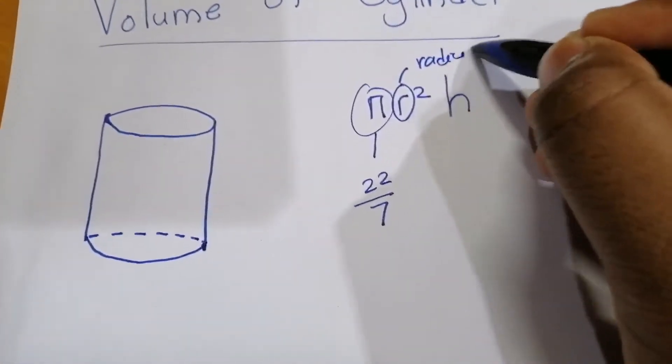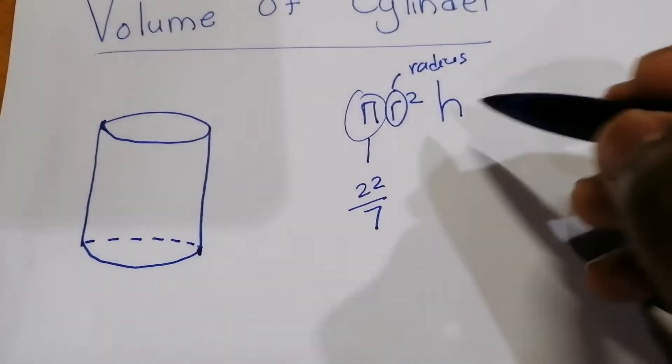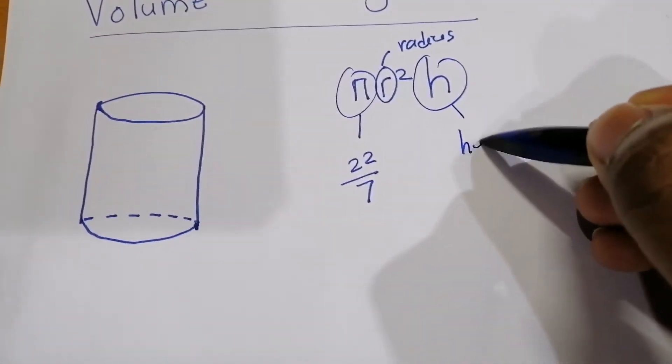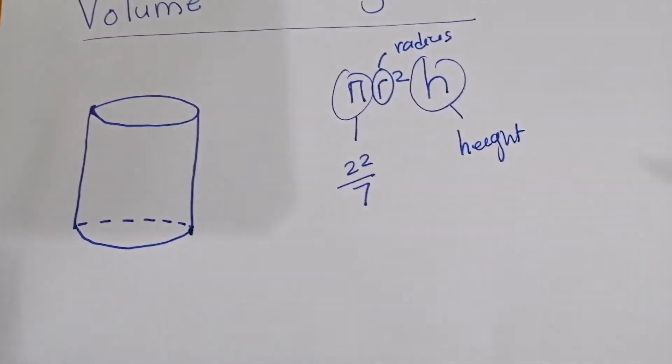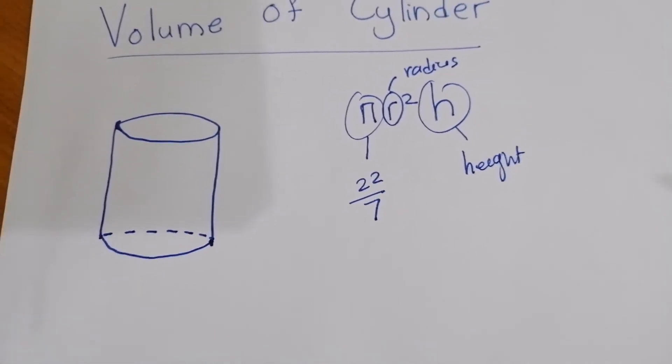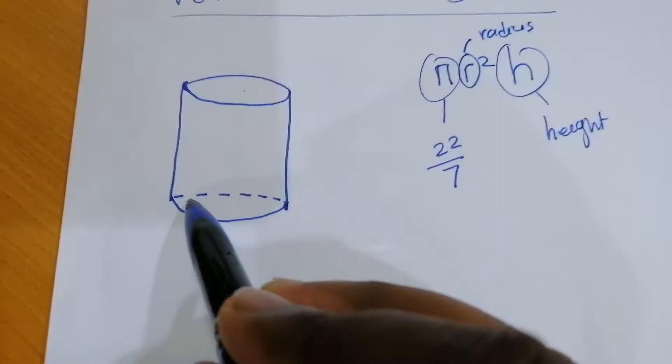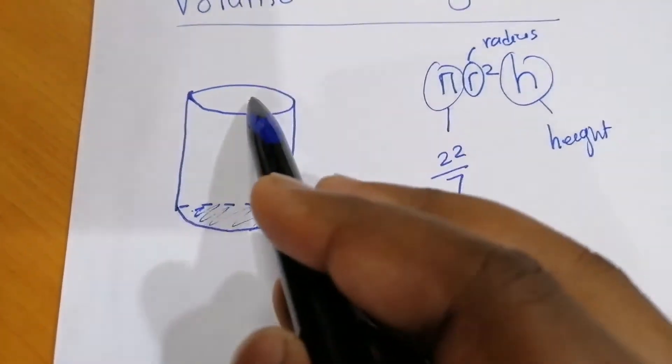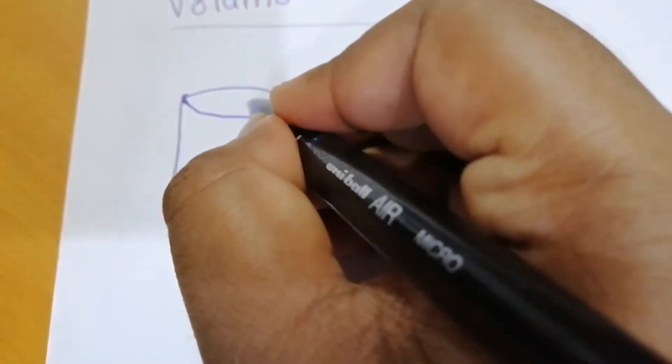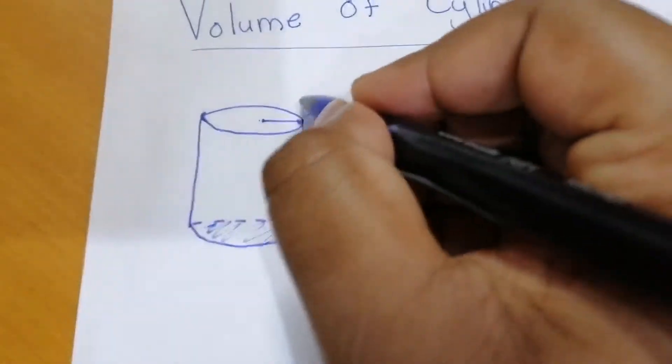h equals height. There are two circles, one at the top and one at the bottom of the cylinder.